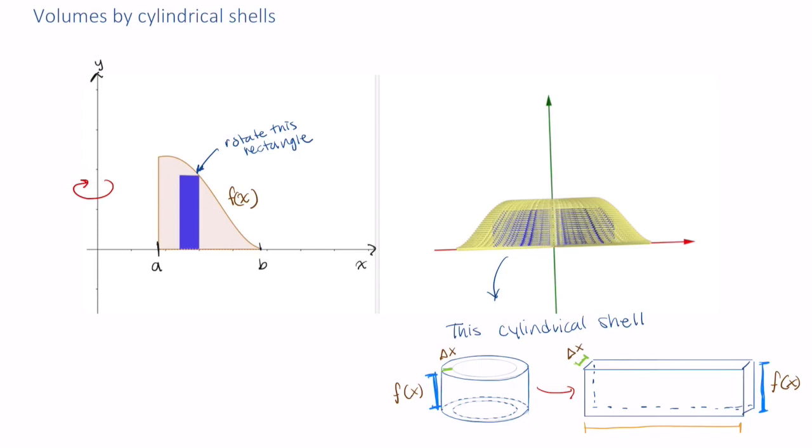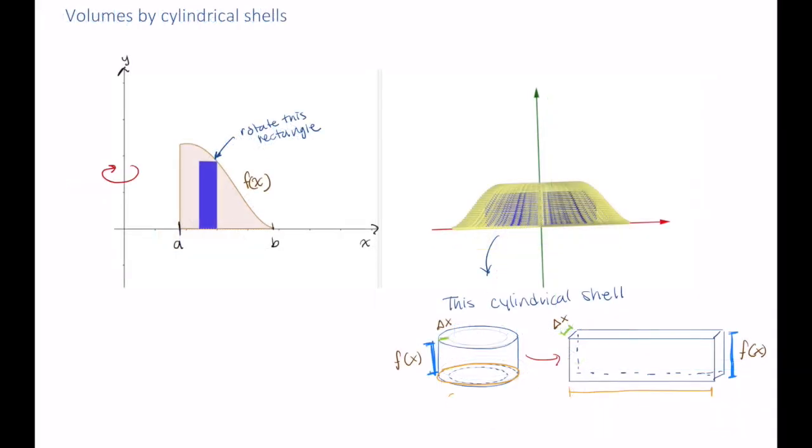Finally, we have this orange distance that runs along the bottom. Remember, we sliced the cylindrical shell and unrolled it here. So this orange distance is just the circumference of this entire shell. What is circumference? It's 2 pi r.